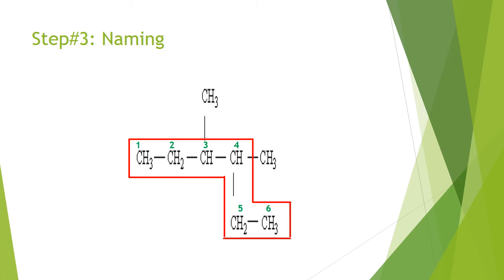Step number three is naming, where it starts by naming the branches. Here we have two methyl branches connected to the main chain at carbons three and four respectively. This implies that the final name of this alkane is 3,4-dimethylhexane.